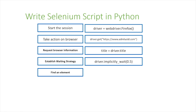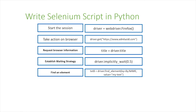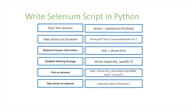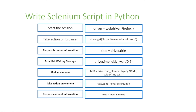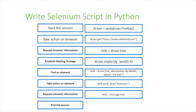Next, you can find an element using `driver.find_element` with `by.name` or `by.id` to locate it. You can also take actions on elements — for example `send_keys` to type in 'selenium' and send it to that element. You can also request element information; for example, `text = message.text` to retrieve the text of different elements. Finally, to end your Selenium session in Python, you call `driver.quit`.